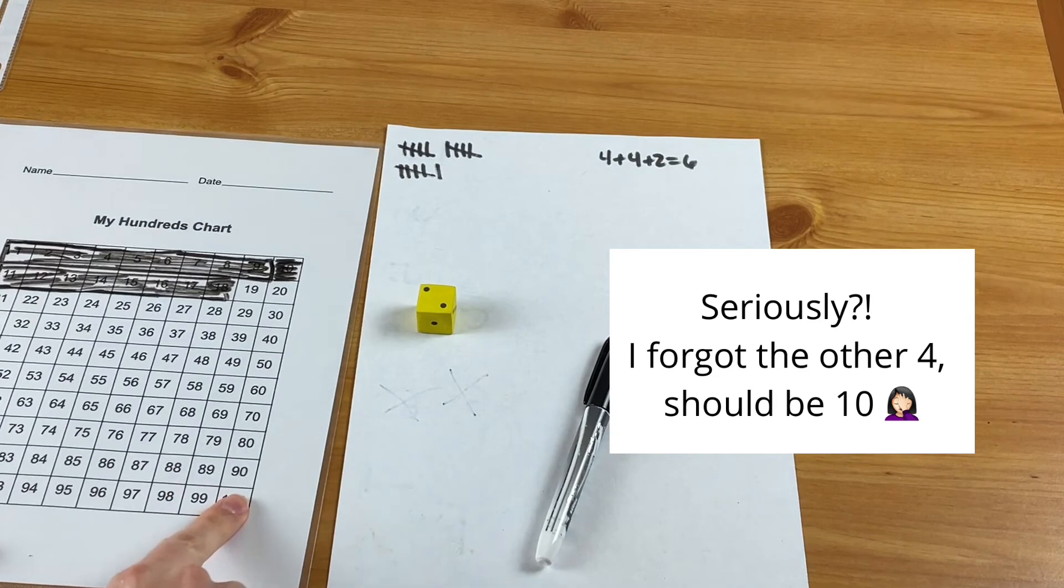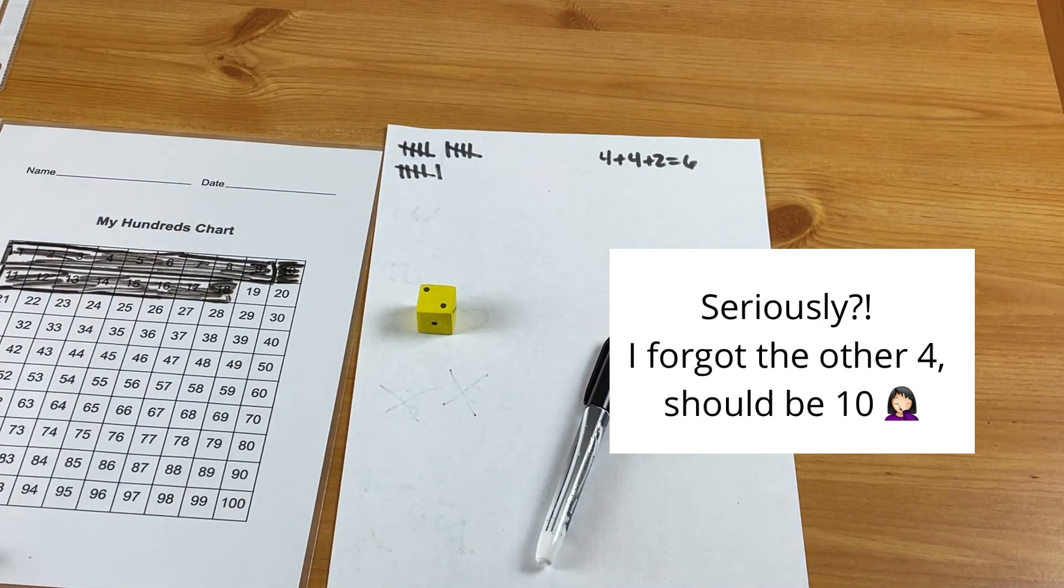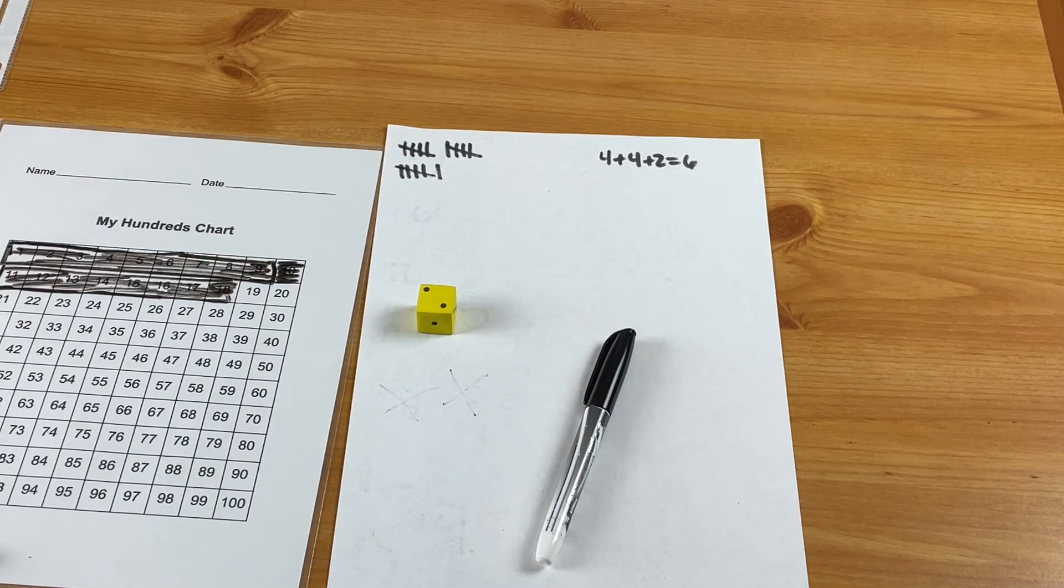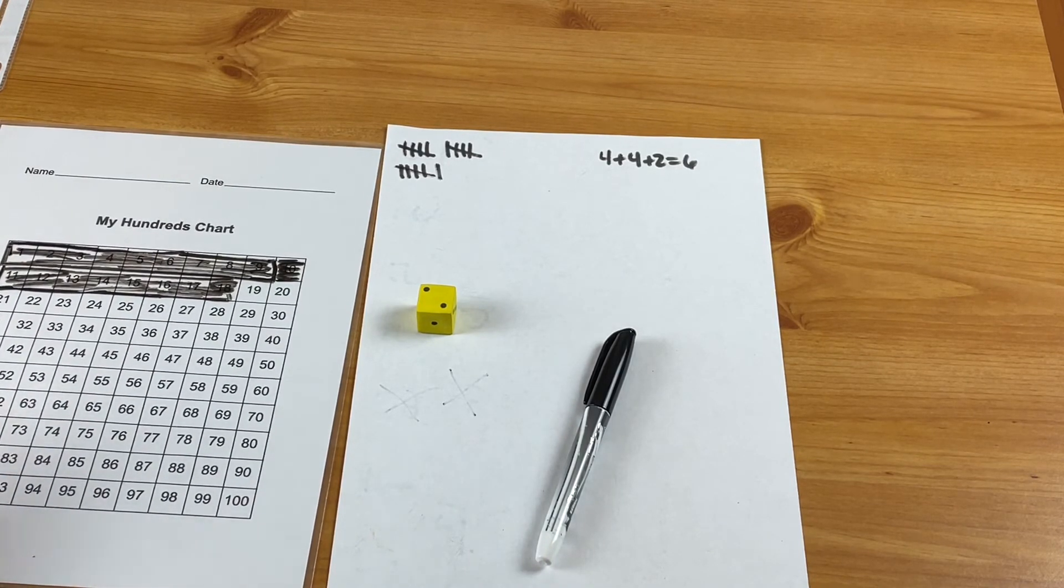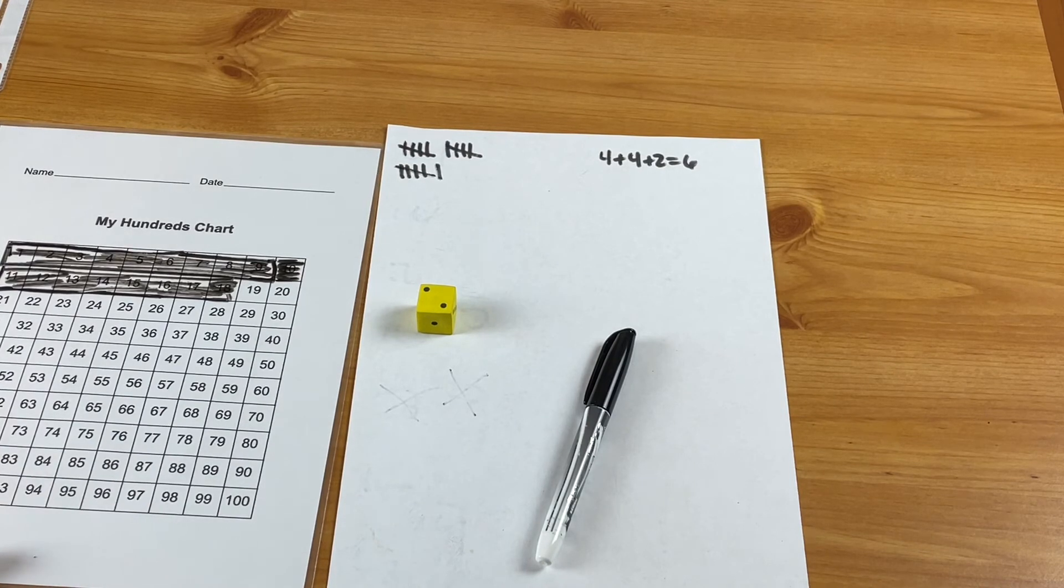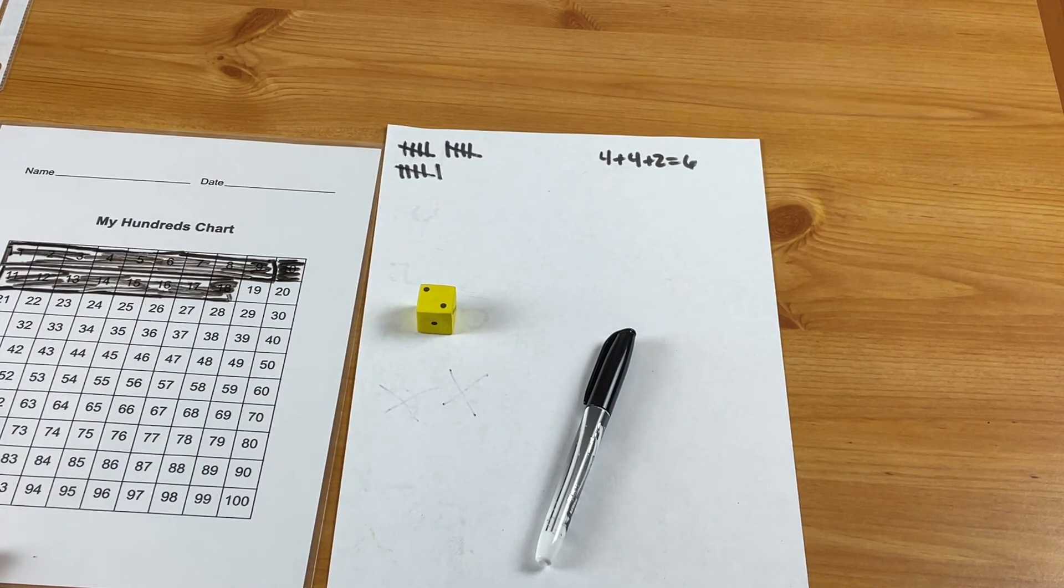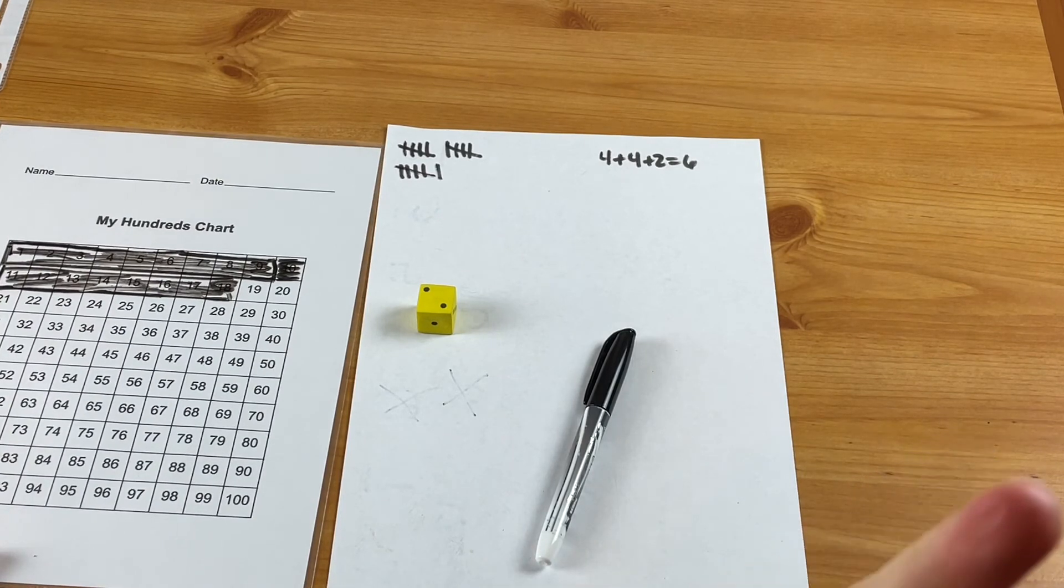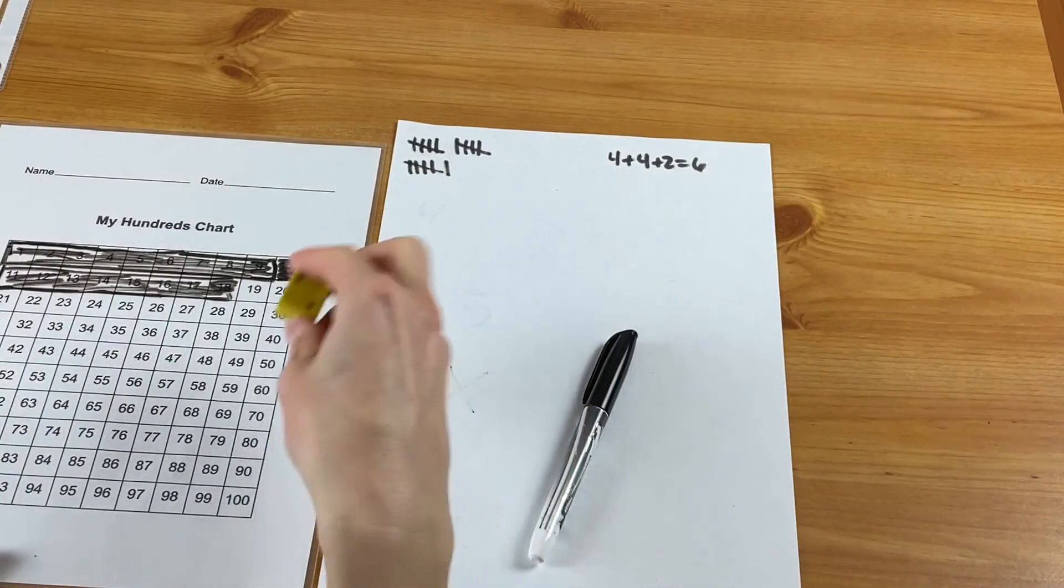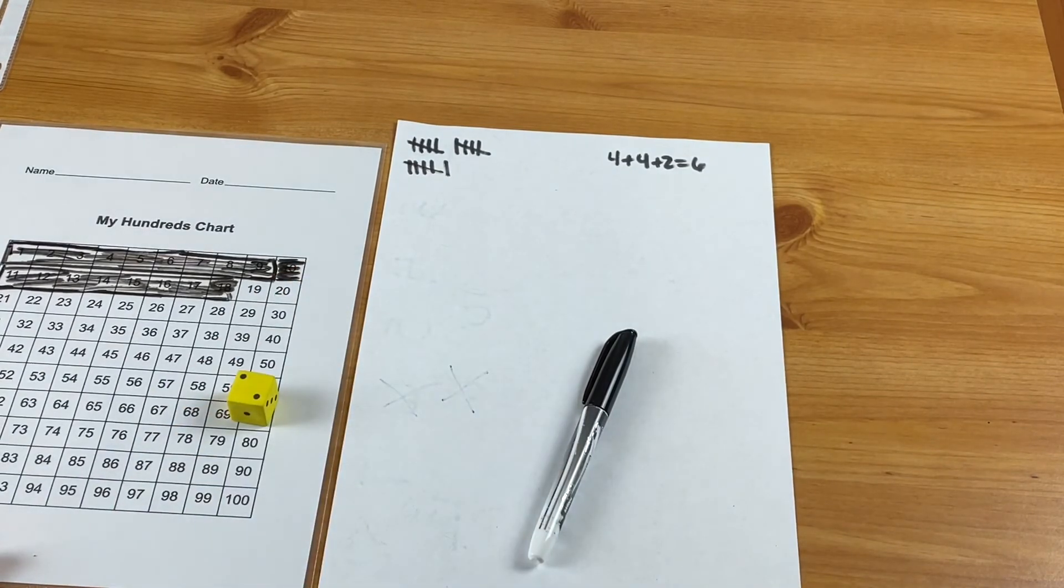You could really set any number you want to have be the end point, and then whoever gets there faster wins. So this one's great for a little strategy, kind of risk-taking, and again helps just with their mental math and quickness on their math facts. Also another great game for traveling - you really just need dice and a piece of paper, and really you only need one die, so super simple to play on the go.